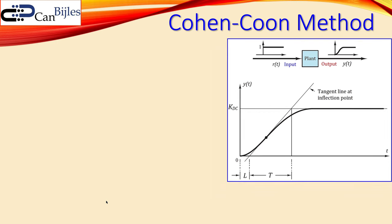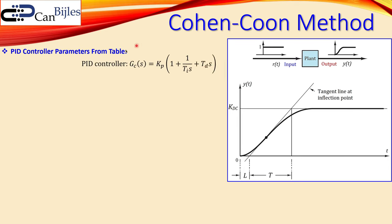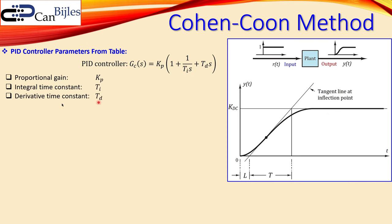Now let's look at the parameters for our PID controller. The general PID controller transfer function contains Kp, the proportional controller gain; Ti, the time constant for the integrator part; and Td, the time constant for the derivative part. We need to determine these three parameters to design a PID controller.